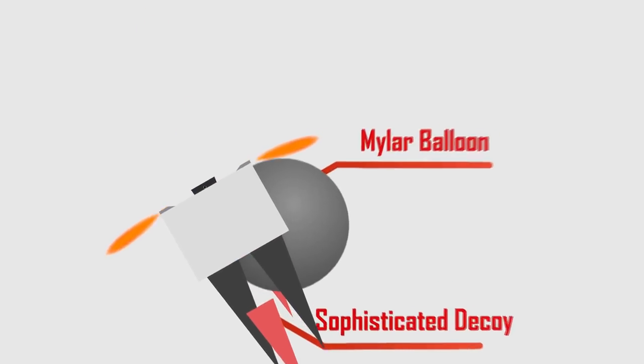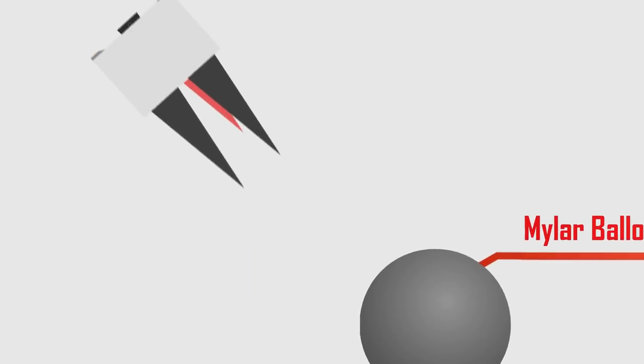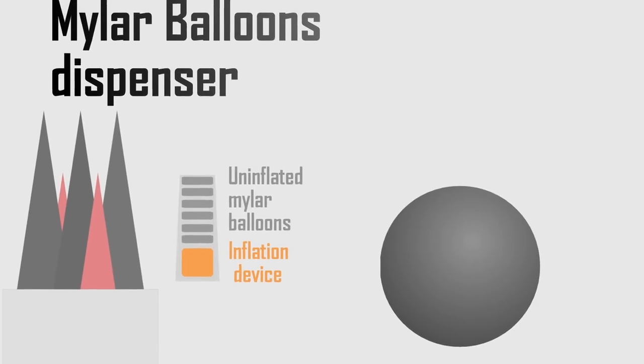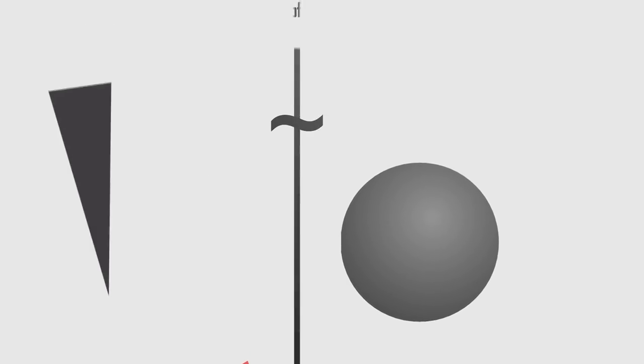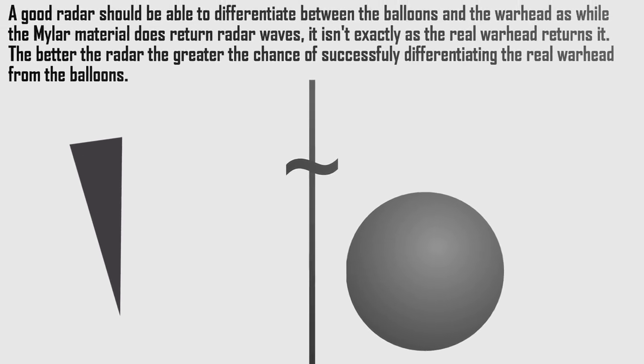These are designed to make it harder to intercept the warheads, and most important are the decoys. In this scenario, the missile releases a number of simple mylar balloons and two more sophisticated decoys. The mylar balloons were stored on the missile and are being inflated now, and those don't take up a lot of space. The mylar material has a radar signature, and those make it harder to determine how many interceptors must be launched.